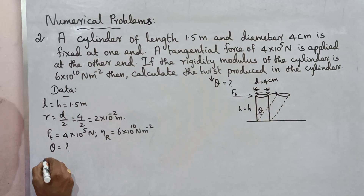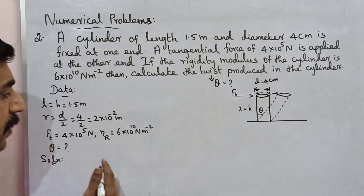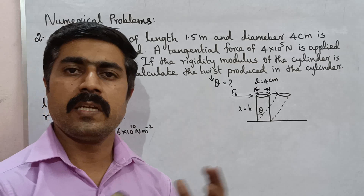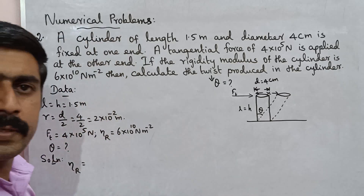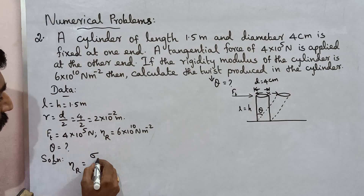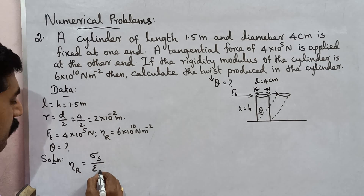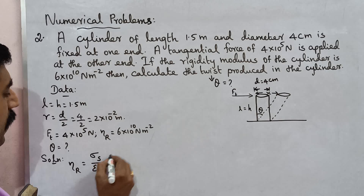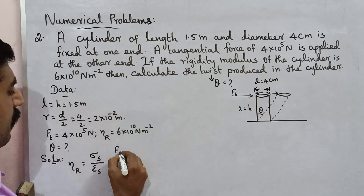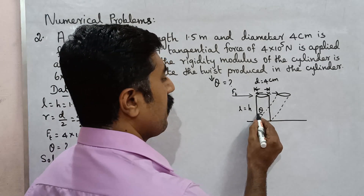Solution: rigidity modulus eta r is equal to shearing stress divided by shearing strain. Shearing stress sigma s is equal to force by area — tangential force F_T divided by area A.